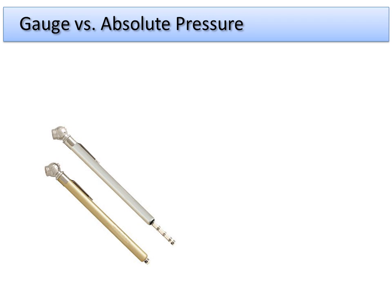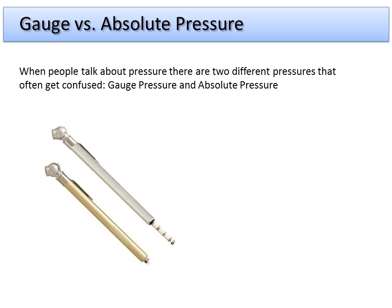One of the very confusing things about pressure is that in the real world we use two different types of pressures. One is the absolute pressure, the other one is what we call gauge pressure. It gets confusing because we're so used to gauge pressure — almost all the pressure gauges out there read a gauge pressure.